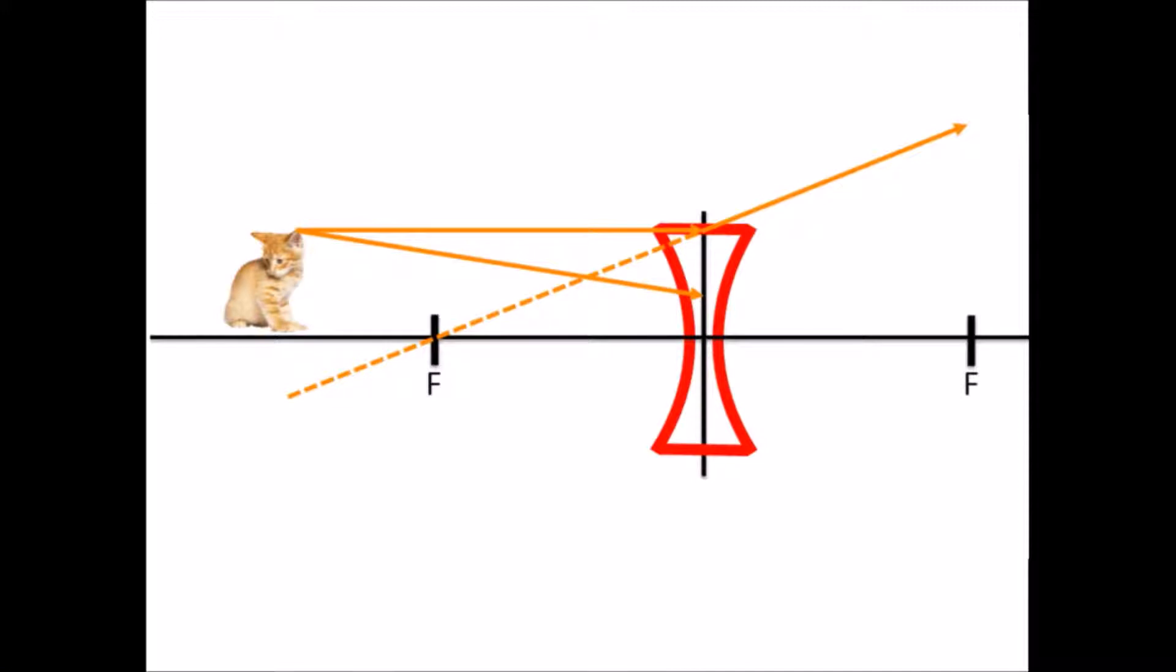Next, we draw an incident ray that's aimed at the second focus. But of course, it won't hit that focus because it's refracted instead. Stop this ray at the pole. Refraction causes the ray to come out parallel to the axis, like this.